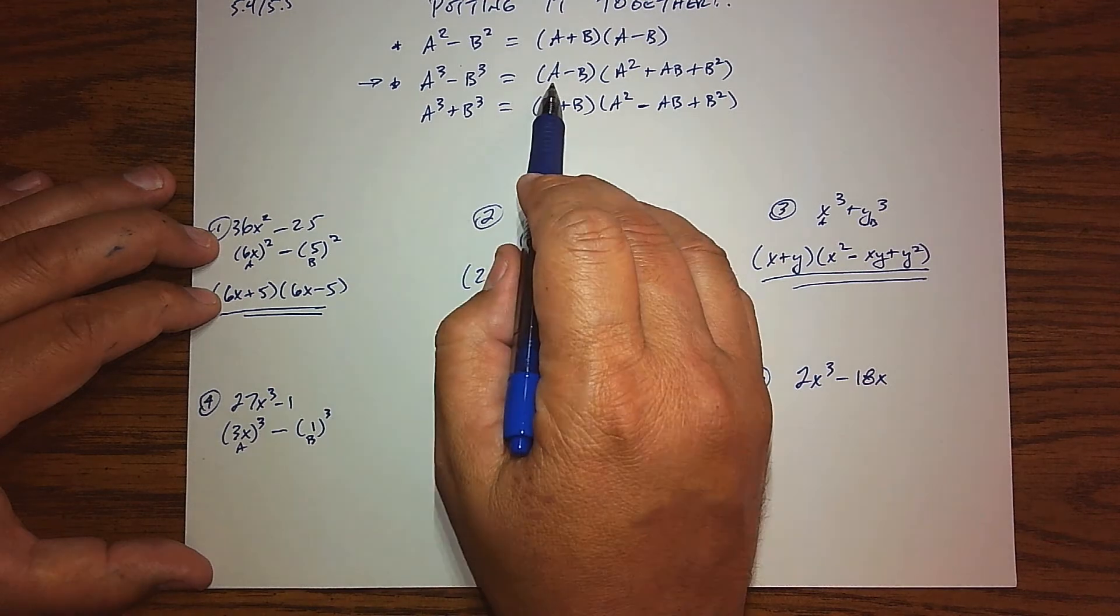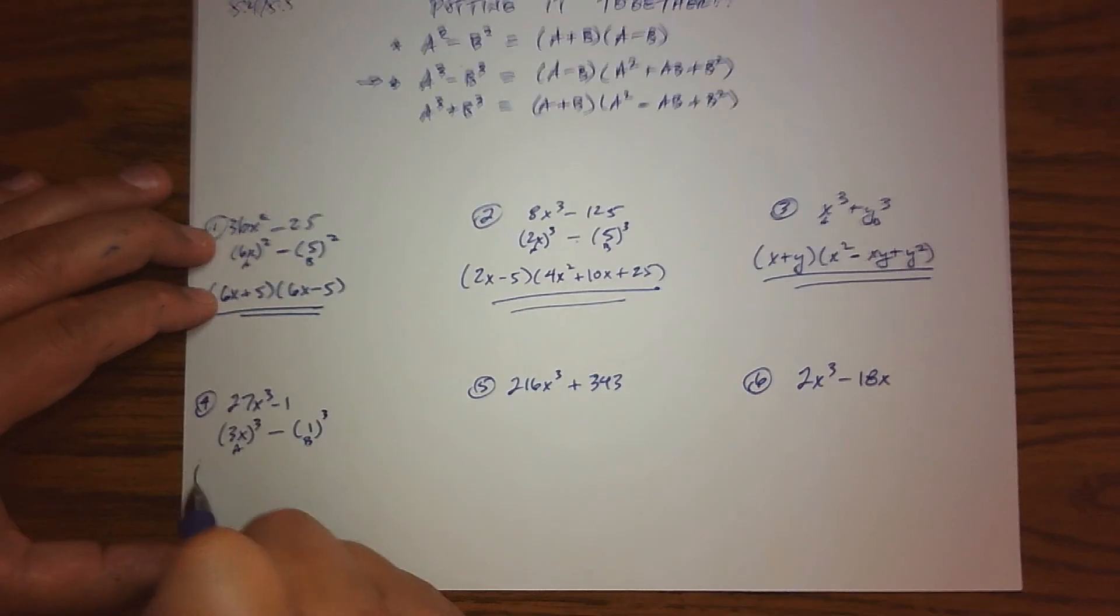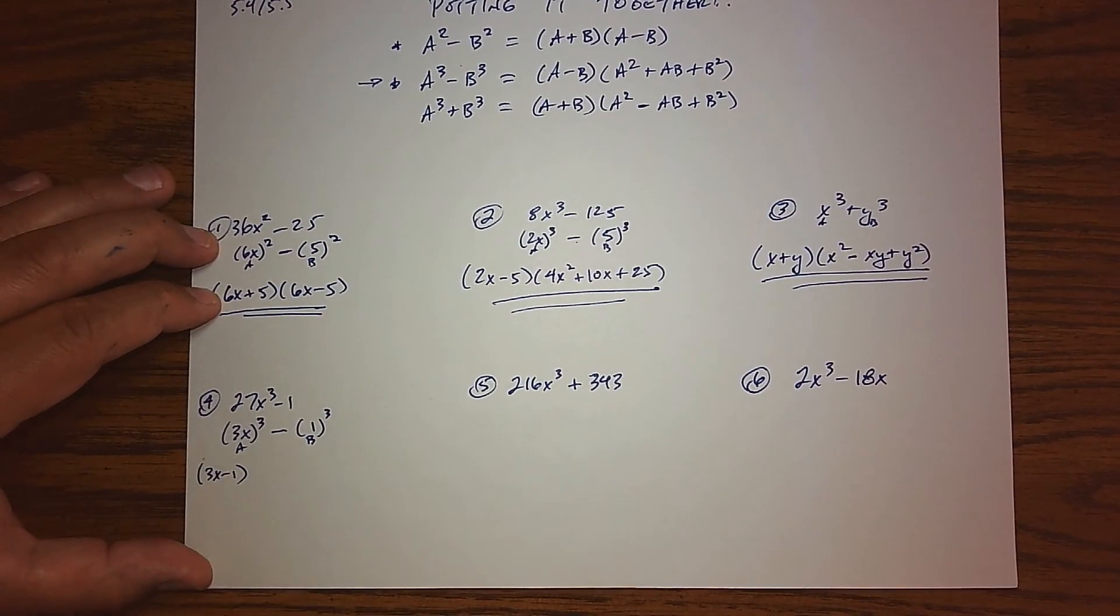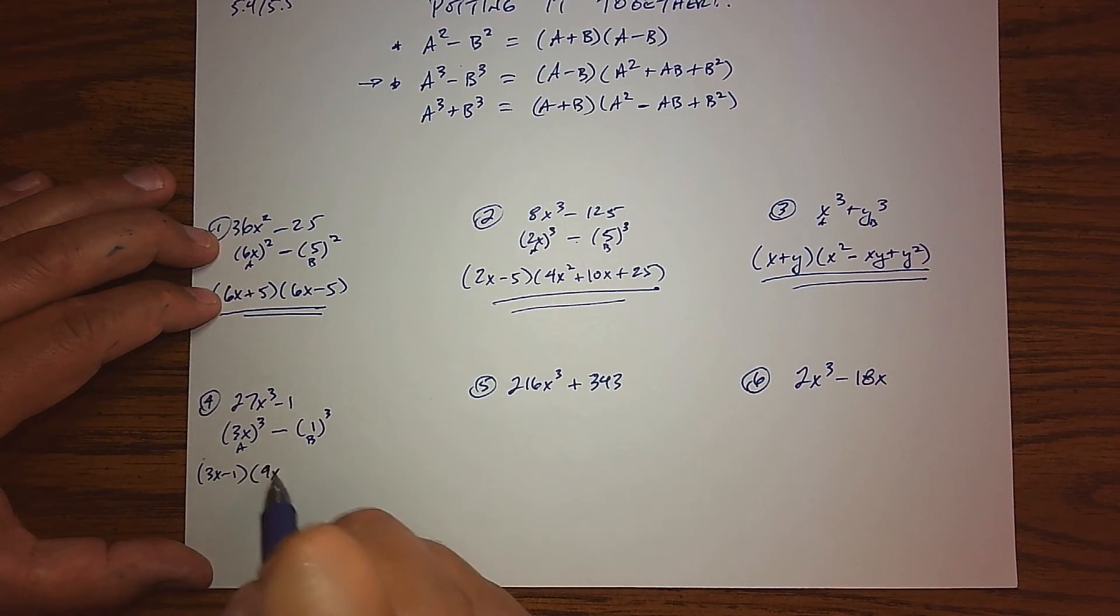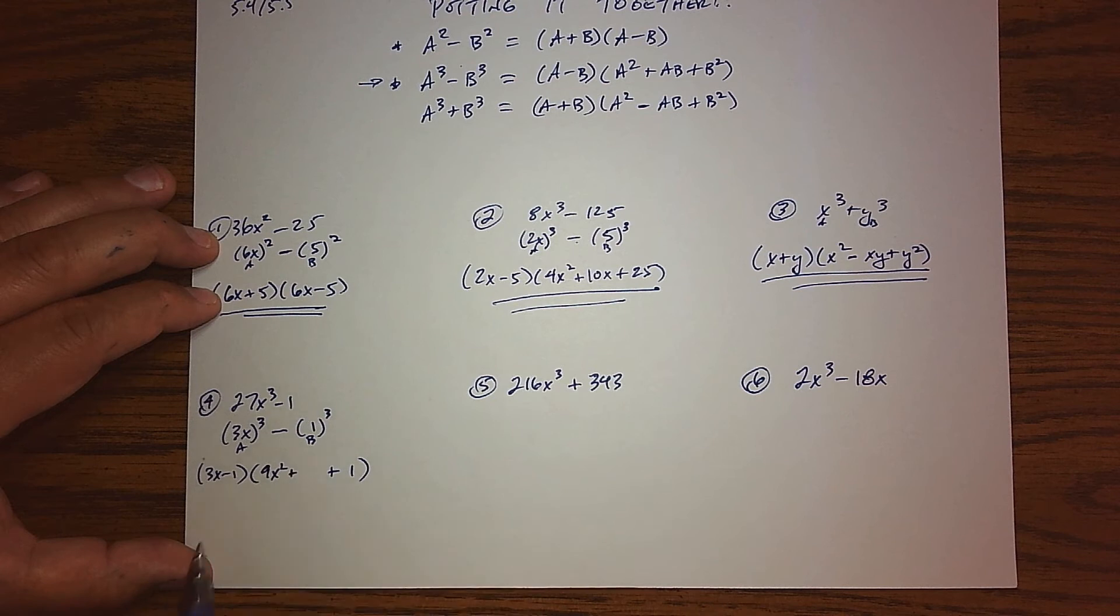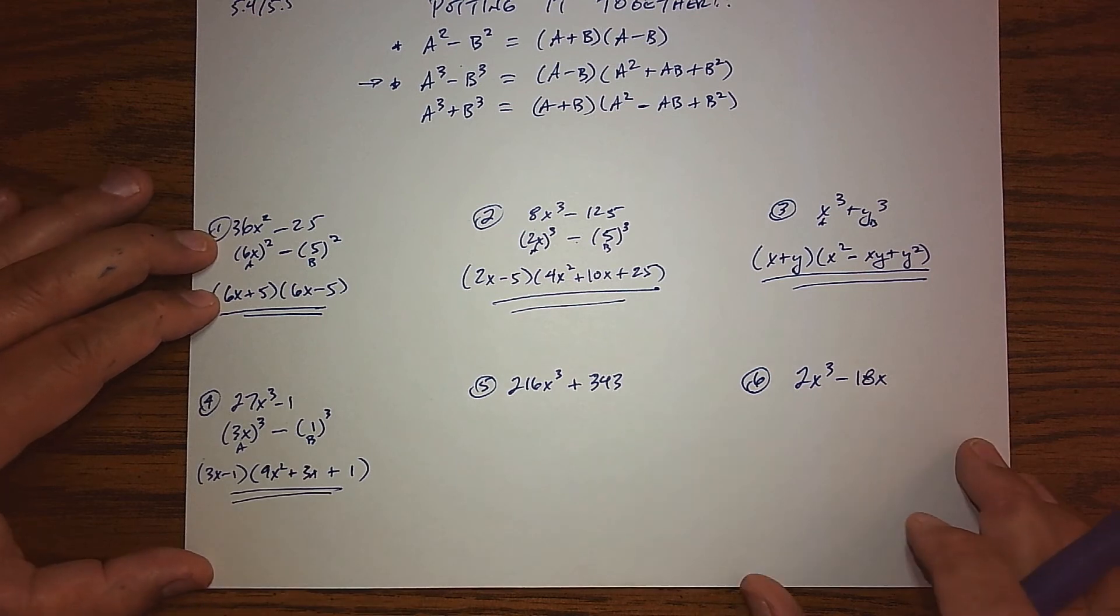So replace a with 3x, replace b with 1, and we got it. We're going to take those bases and subtract them, we're going to square the first base, we're going to square the second base, and we're going to add their product. So 3x times 1 is 3x, so there's our factorization of number four using our difference of cubes pattern.